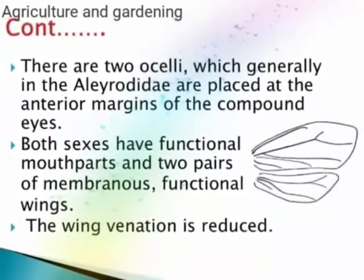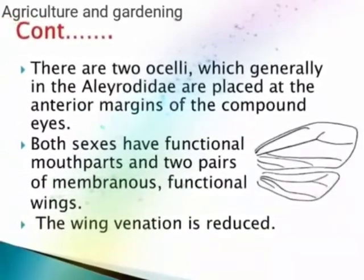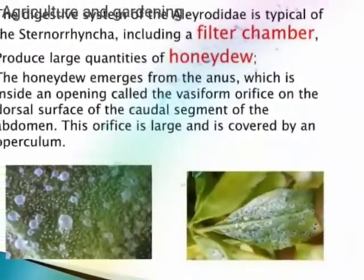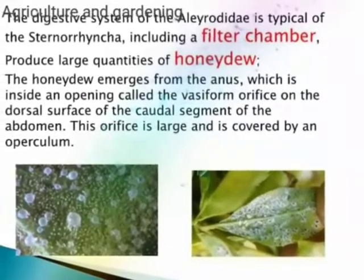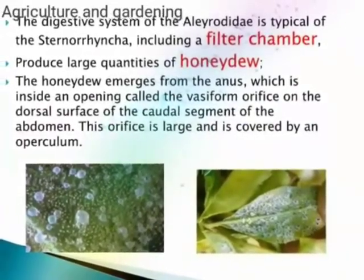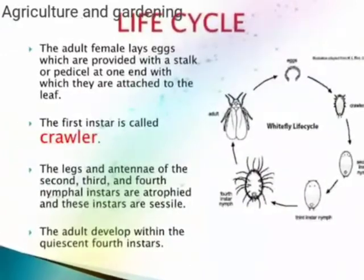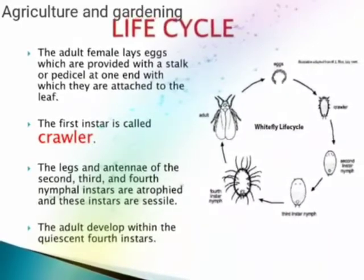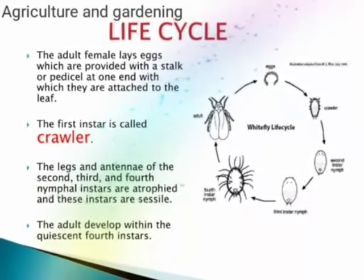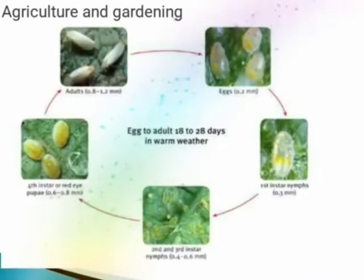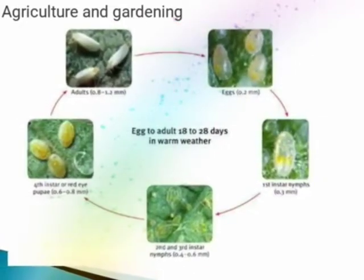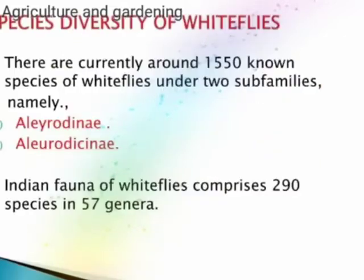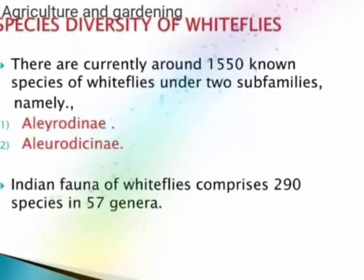Both sexes have functional mouth parts and two pairs of wings, though venation is reduced. There are filter chambers and honeydew; the honeydew emerges from ants inside the opening. The life cycle involves adult female legs provided with stalks of pinnacles, with the whitefly attached to the leaves. The life cycle lasts 18 to 28 days in warm weather, with different larval stages.